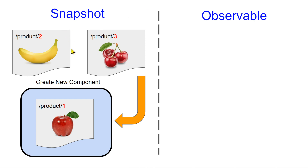Each of these is a particular component. The first component stores the data for the banana, the cherry, the apple, and so forth. The blue box represents the view. So when you navigate to a particular URL that matches this pattern, the snapshot method means the router will generate a new component every time you navigate to a particular ID.